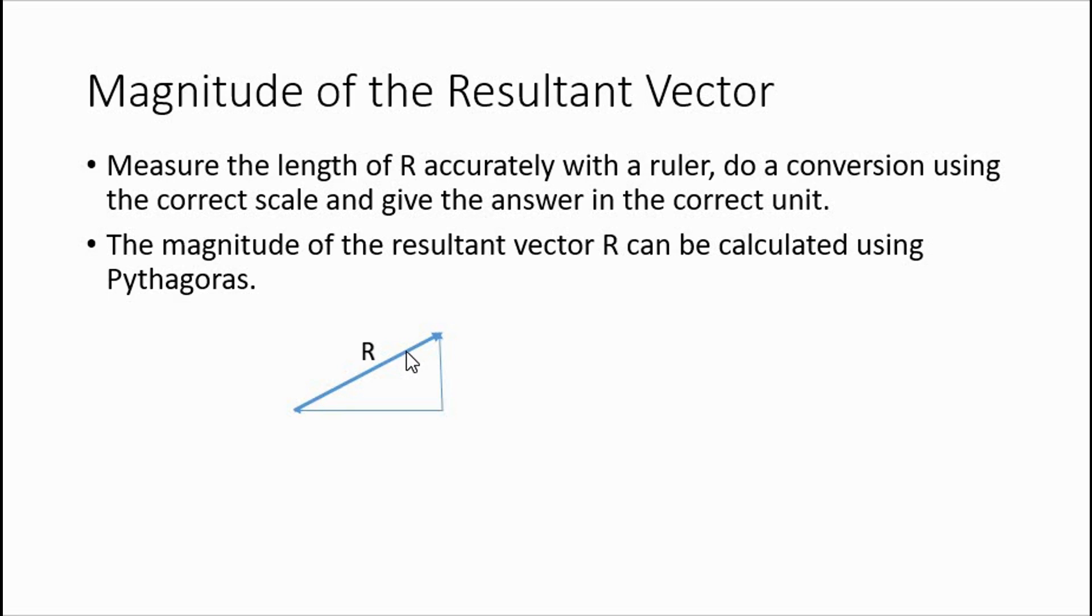Now, the magnitude of the resultant factor, R, can be calculated using Pythagoras. Now that's very easy. Notice when we calculate our resultant factor, we will not be calculating measurements, but rather the units or the size that the other two vectors are in. So, if we are working with newtons, we know the resultant factor also has to be in newtons as well.